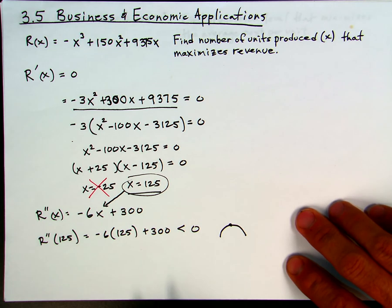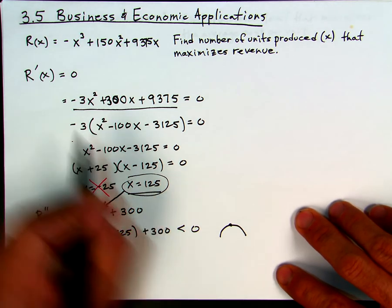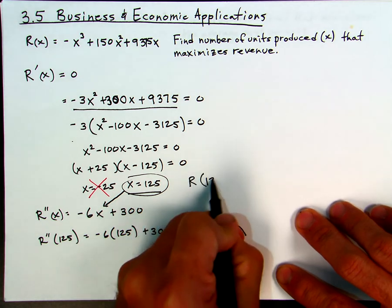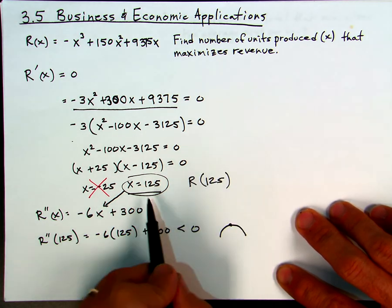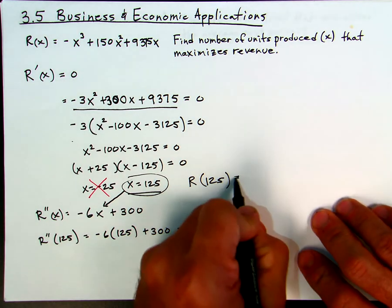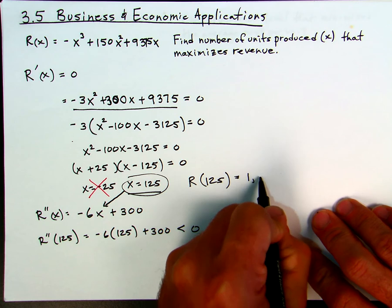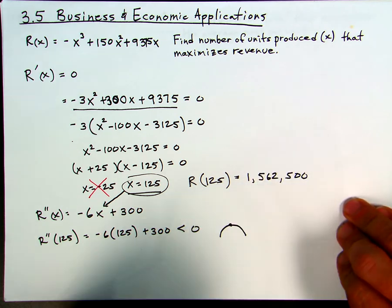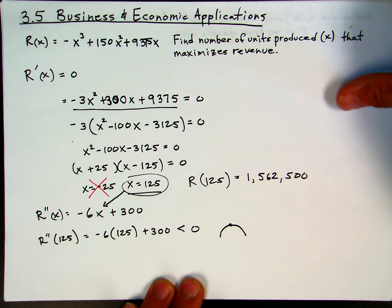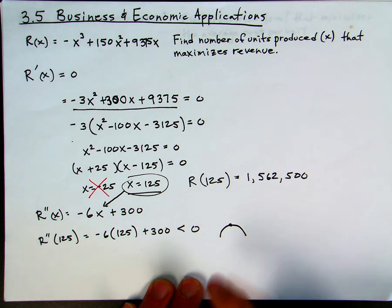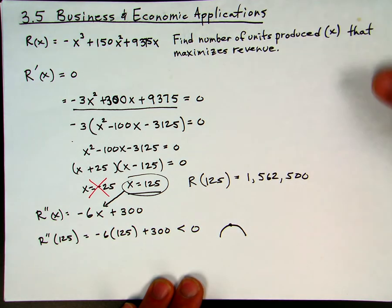A further question that could be asked is what would be that maximum revenue? We would just put 125 back into the revenue function. Evaluating revenue at 125 units, you would find that the maximum revenue is 1,562,500. That was a pretty straightforward example of how we would use the derivative and calculus to find the maximum of a revenue function.